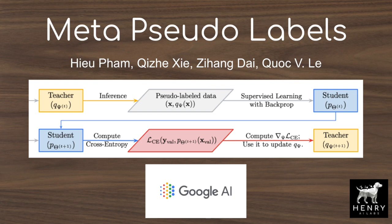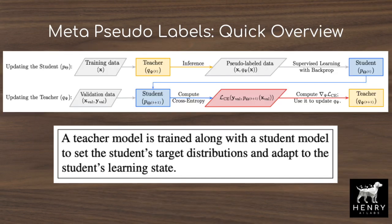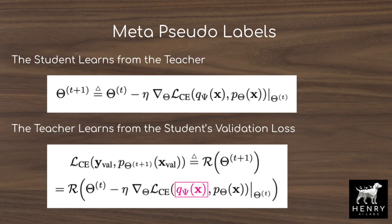Supervised learning updates the parameters of a neural network to match predicted class labels with the ground truth labels. The construction of these ground truth class vectors is typically done with one-hot encoding, but other techniques such as label smoothing and knowledge distillation have been developed to overcome limitations. MetaPseudoLabels uses the meta-learning framework to dynamically adapt the target distribution throughout training of a student classification network to maximize its validation set accuracy.